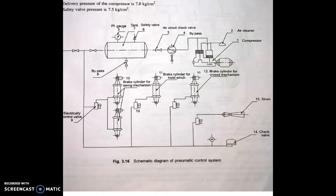Next is the pneumatic control system. This pneumatic system consists of a twin-cylinder reciprocating compressor driven by an AC motor, and delivers air to the tank through an air check valve. The tank is fitted with pressure gauges and a safety valve. Air from the tank is distributed to the swing mechanism brake cylinders, which are controlled through three separately operated solenoid valves. There is one siren operated by air through another solenoid valve. The remaining end is connected to a T-valve for any other auxiliary use. The delivery pressure of the compressor is 7.0 kg per square cm and the safety valve pressure is 7.5 kg per square cm.